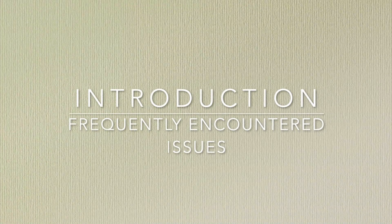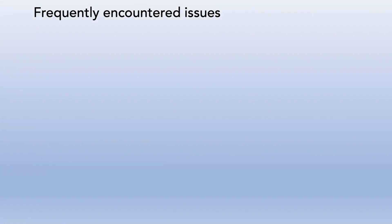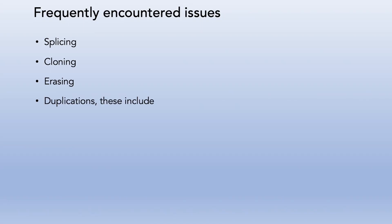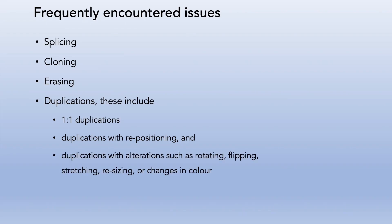We will start by introducing the most common types of image aberrations. These are: splicing, cloning, erasing, and duplications — including straight duplicates, part duplicates, and duplicates with alterations such as rotating, flipping, stretching and resizing — and also over-contrasting and cropping.